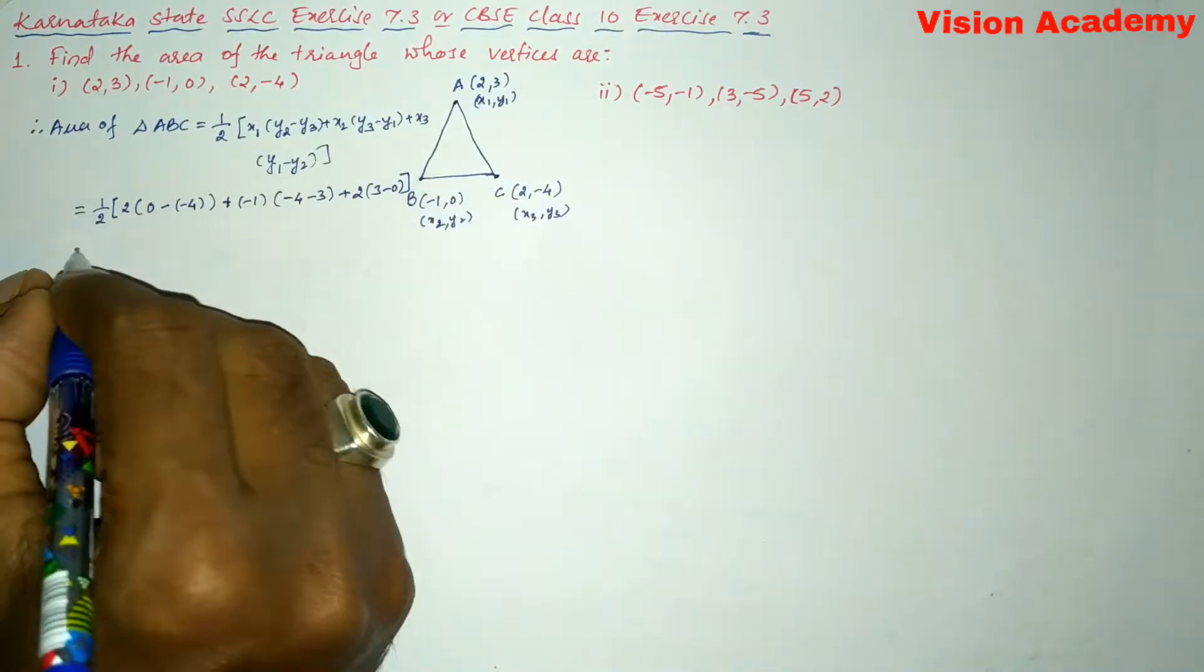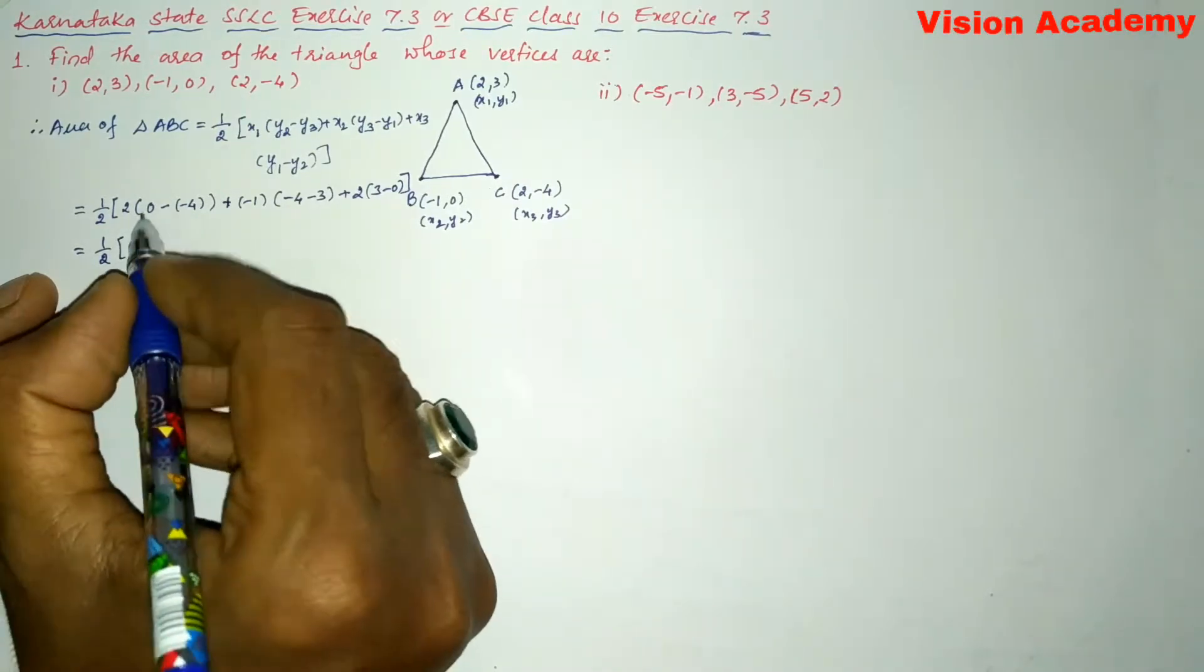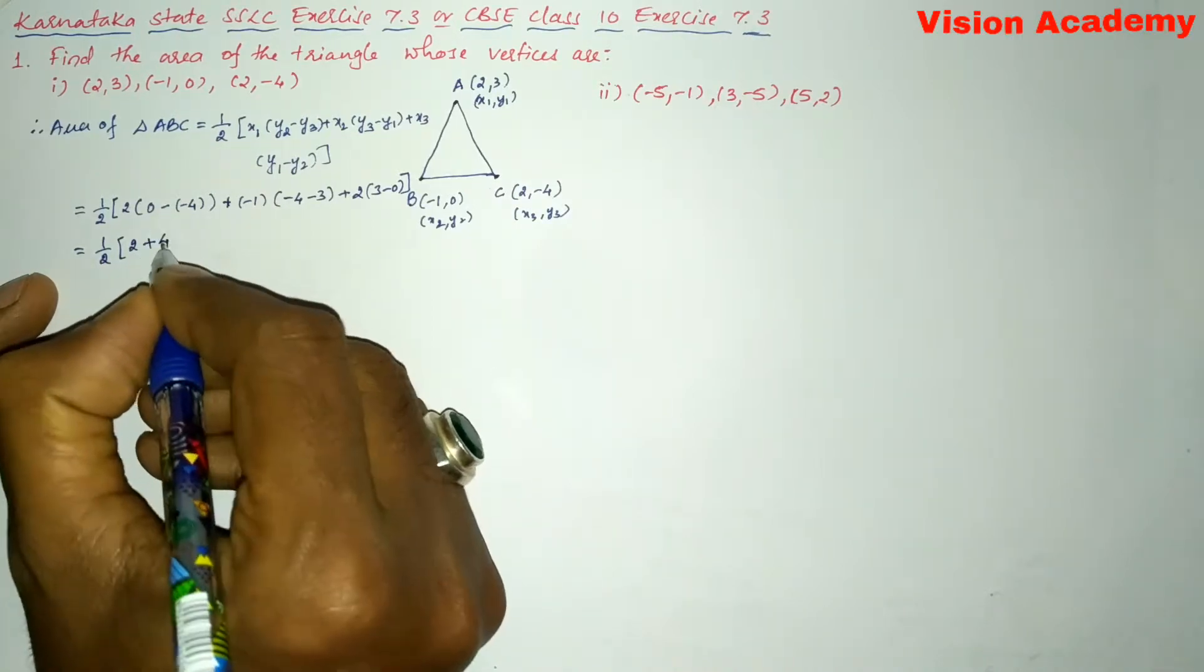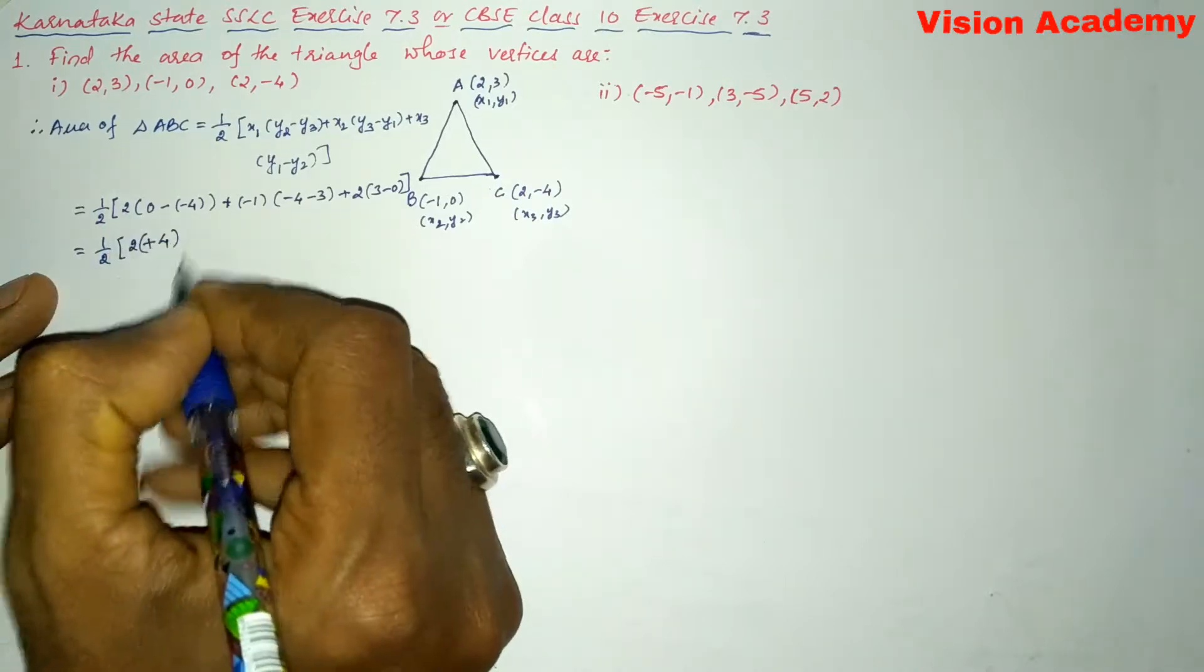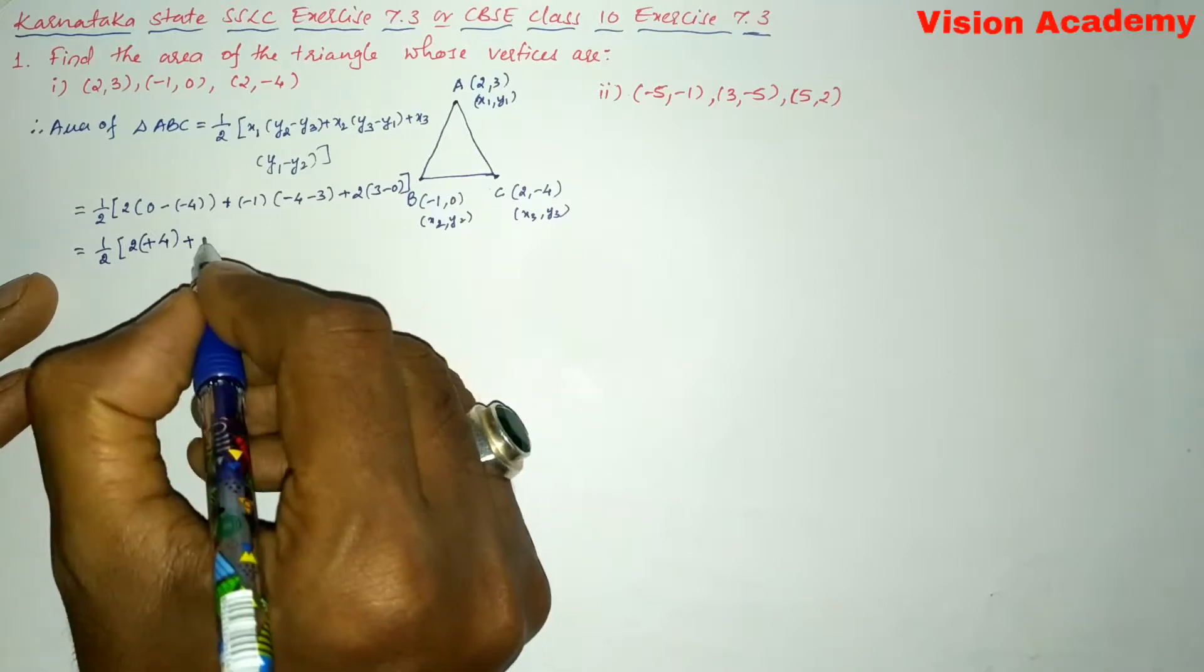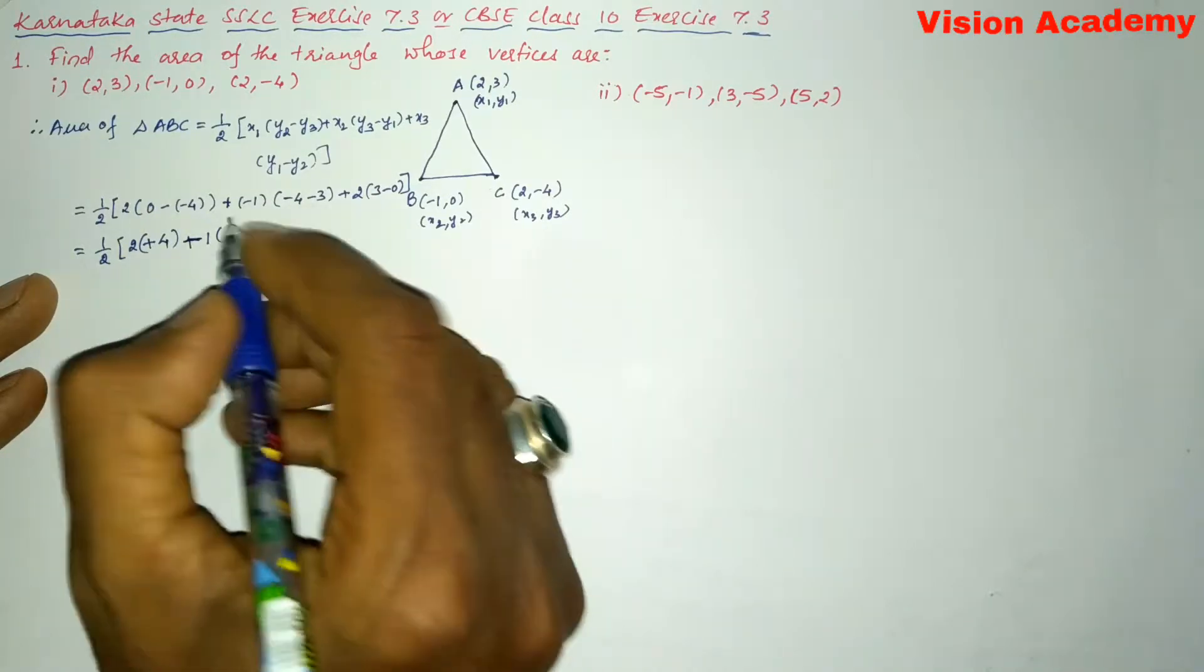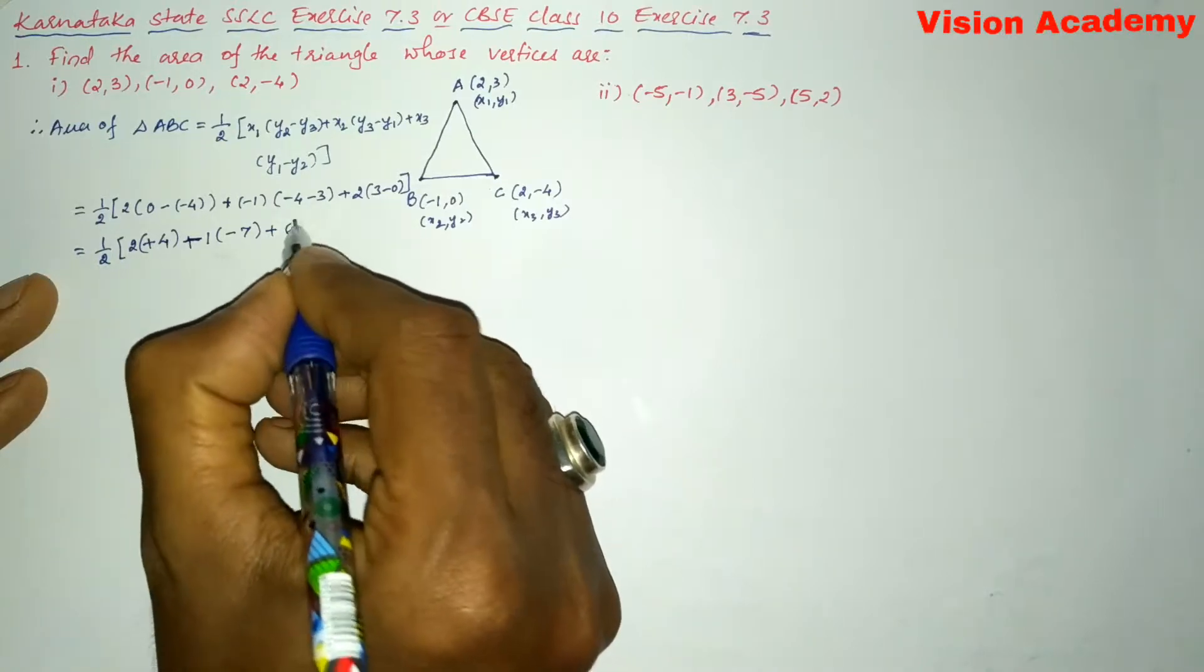Now let us further simplify. This gives us 1/2 into [2(0-(-4)) + (-1)(-4-(-3)) + 2(3-0)]. So this is 1/2 into [2(4) + (-1)(-7) + 2(3)].